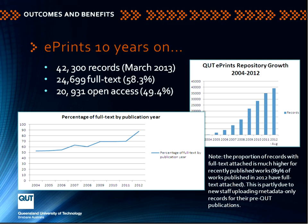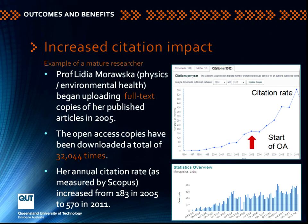I want to turn to some of the impacts on our researchers themselves and the evidence about the greater visibility of research. Here is one of our researchers whose area is air quality. She began uploading full text copies in 2005, where that red arrow indicates. After that time, we see a very sharp increase in her citation rates, and you can see for the same period the download activity for her work.